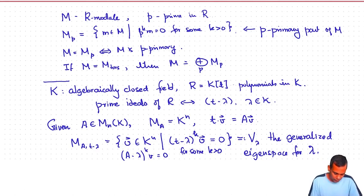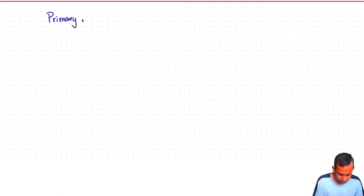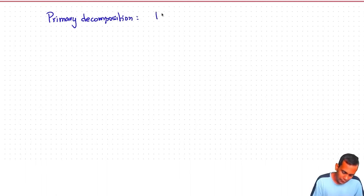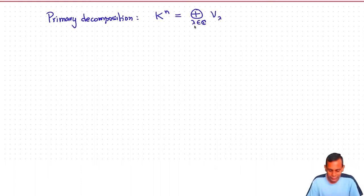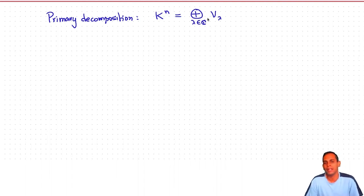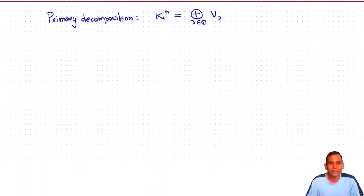What the primary decomposition says is that the vector space K^n on which the matrix acts is a direct sum over λ in K of V_λ. This looks like an infinite direct sum, but it isn't, because the generalized eigenspace will be trivial for all but finitely many λ — since K^n is a finite-dimensional vector space, this is a finite direct sum.